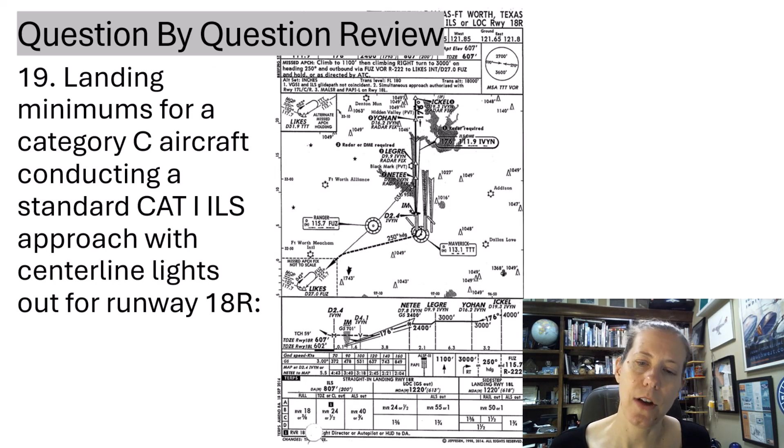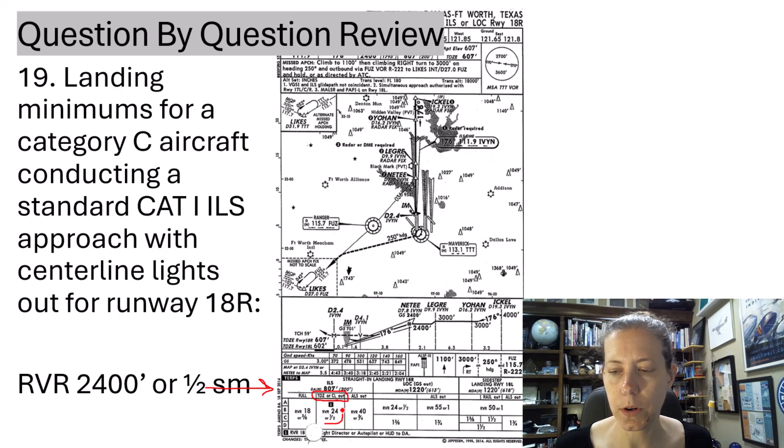Landing minimums for Category C aircraft conducting a Cat 1 ILS approach with centerline lights out for runway 18 right. So with this one, we can look at the bottom section of the chart with my landing minimums. For the ILS, landing minimums are only visibility, so don't talk about decision altitude, that's not part of landing minimum. There's no ceiling required for an ILS, so don't talk about that. With the centerline lights out of service, we have to use this box here, so we get an RVR of 2,400 or half statute mile. You can read the little 1 note, kind of punctured off with my hole punch, but RVR 1800 with flight director or autopilot or heads-up display to the DA. Honestly, to keep this simple, I'm just going to say it's 2,400 RVR or half statute mile because the centerline lights are out of service.